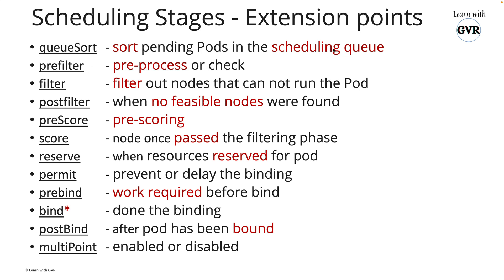The scheduling stages are: QueueSort, PreFilter, Filter, PostFilter, PreScore, Score, Reserve, Permit, PreBind, Bind, PostBind, and MultiPoint. These stages happen internally in sequence. As an analogy, it's like buying a home — you identify a builder, check your budget, inspect, and then purchase. Similarly, the scheduler goes through all these stages to decide which node to bind the pod to.